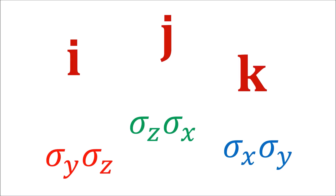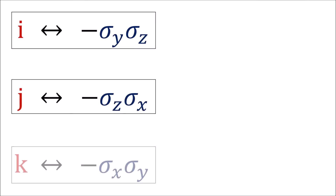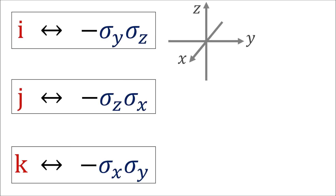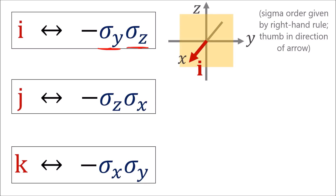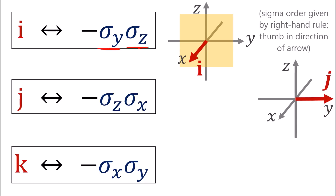So it seems like the quaternion imaginary units i, j, k might somehow be related to pairs of sigma matrices — and that's exactly right. Here's the correspondence between them. There's an easy way to remember this: the quaternion imaginary i is sort of like the x-axis, and this is matched with negative sigma y times sigma z, which is sort of like the yz plane, which is perpendicular to the x-axis. Similarly, j is like the y-axis, associated with the perpendicular zx plane.